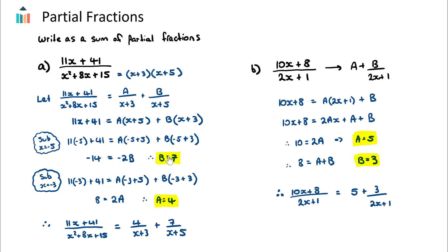Then substituting x = -3 to eliminate B: 11(-3) + 41 = A(-3+5) + B(-3+3), so -33 + 41 = 2A + 0, giving 8 = 2A, therefore A = 4. We can now conclude that the original expression equals 4/(x+3) + 7/(x+5). This form is much easier to integrate than the left hand side, which will be very helpful when we get to integration questions.